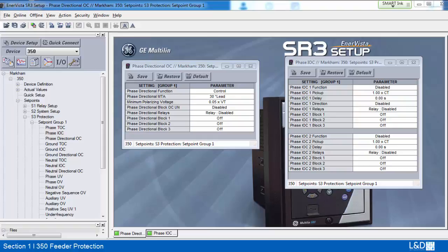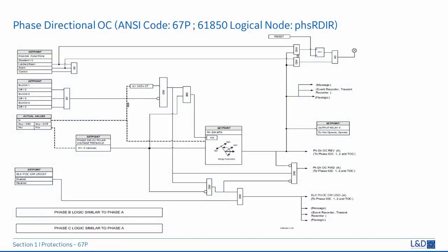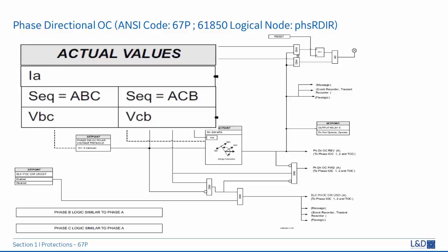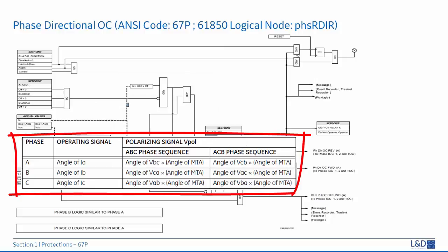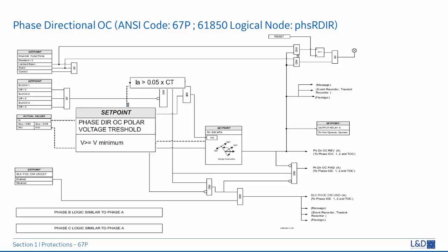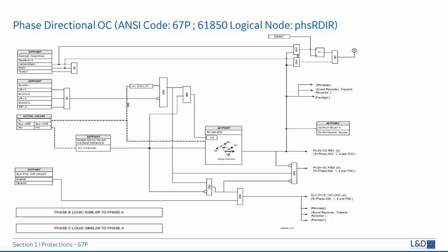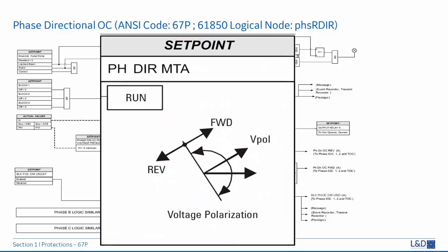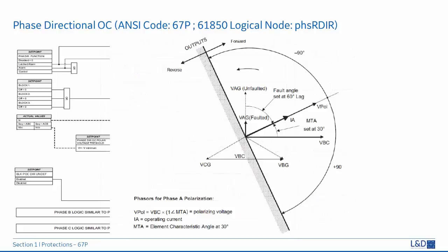From the logic diagram, phase A current needs VBC as polarizing voltage for ABC rotation. For phase B and C, voltages VCA and VAB are used for polarizing. The phase directional function will be inhibited when operating current is less than 5% of CT or polarizing voltage is less than the minimum voltage level.